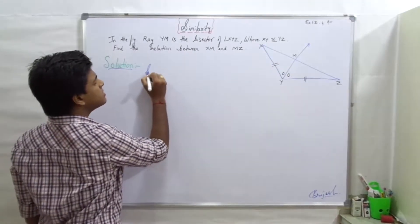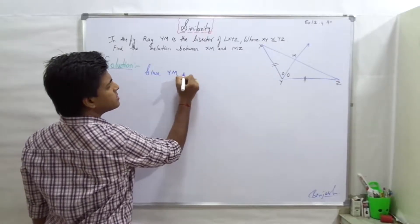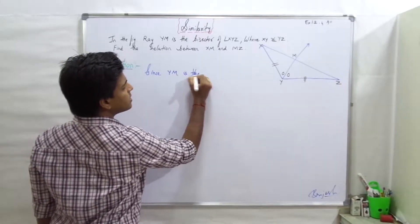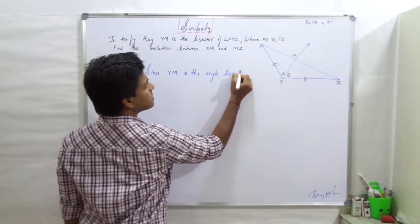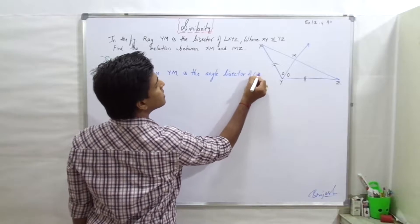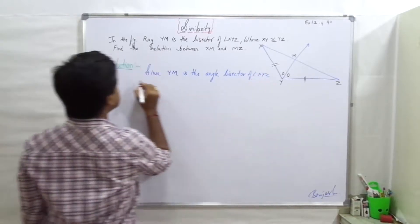Since YM is the angle bisector of angle XYZ, therefore,